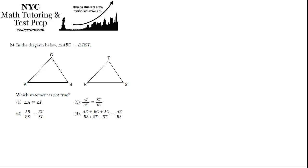Problem 24. In the diagram below, triangle ABC is similar to triangle RST. So let's remember what similarity is. It means that all the angles are equal, but the triangles are a different size, so the lengths of the sides are different. But the lengths of the sides are in proportion.